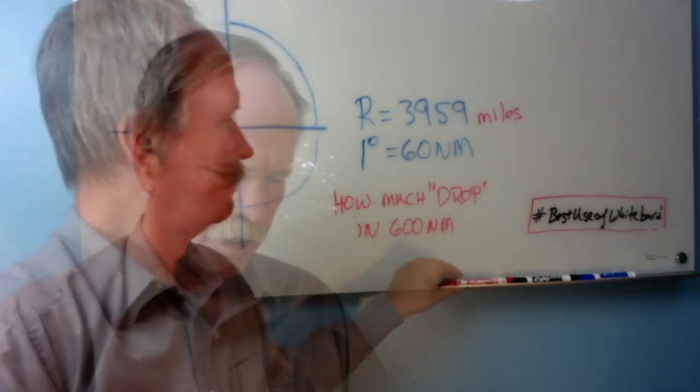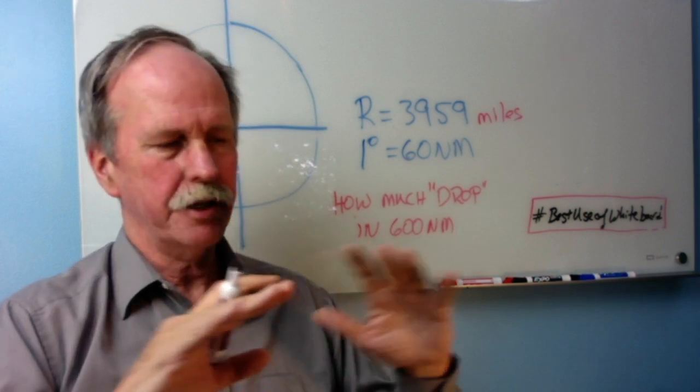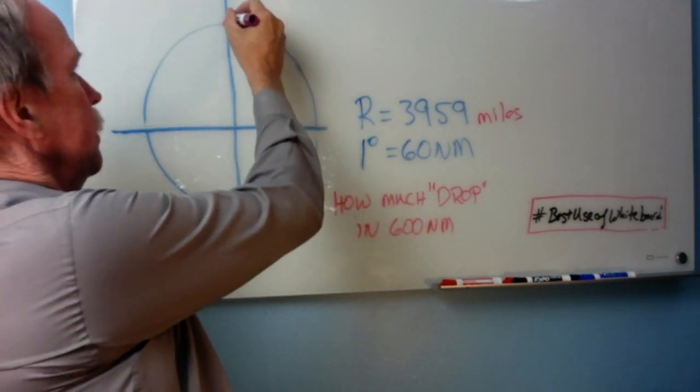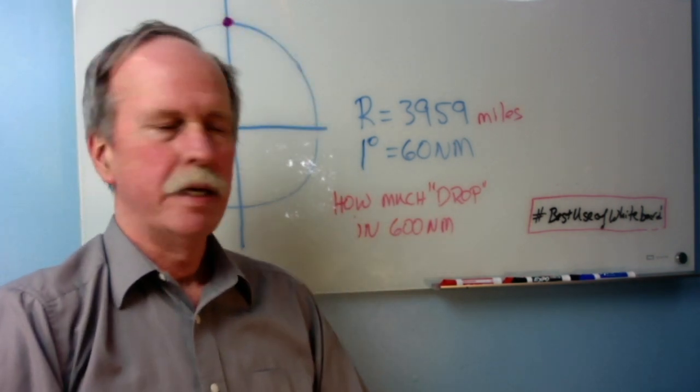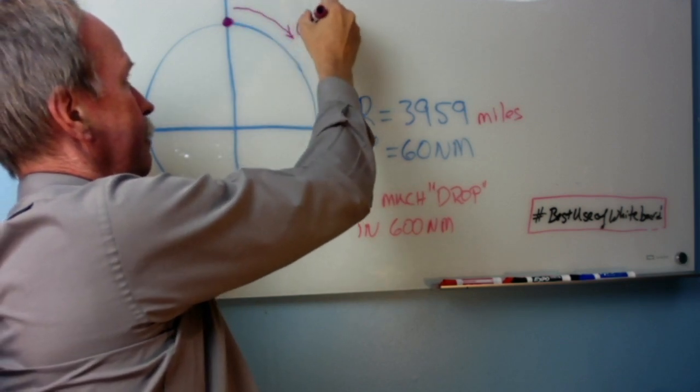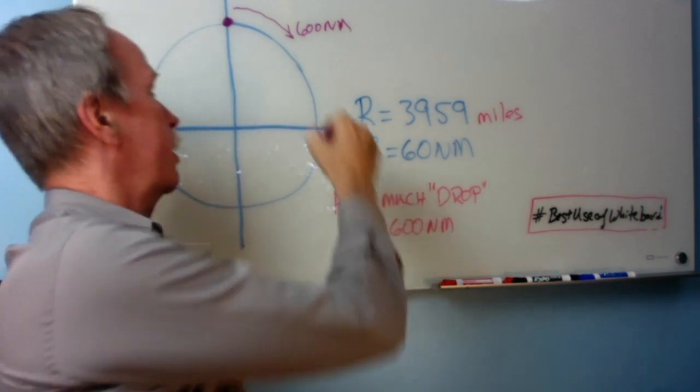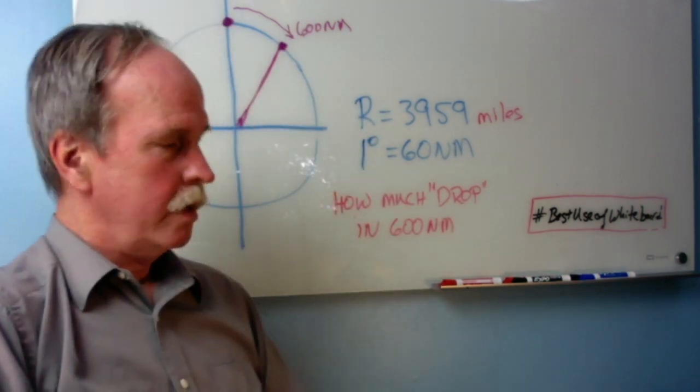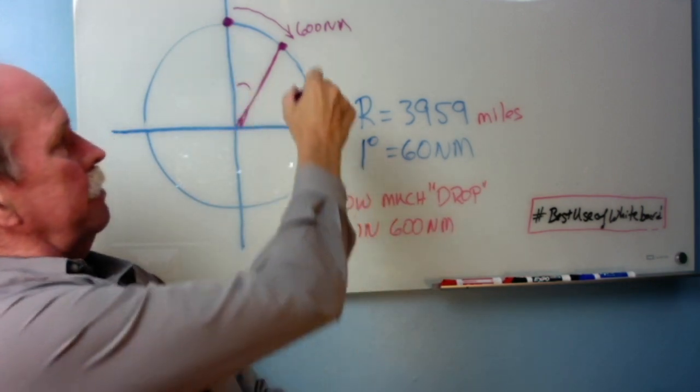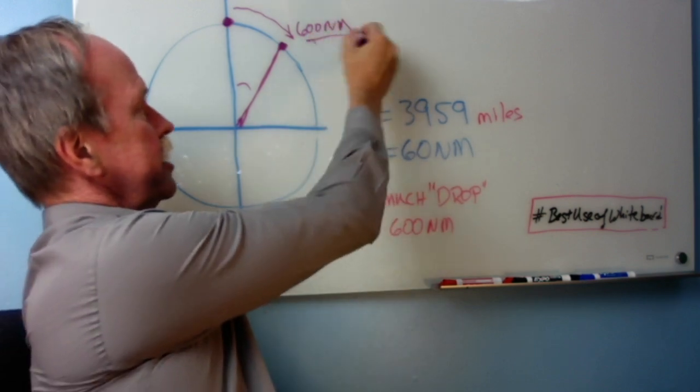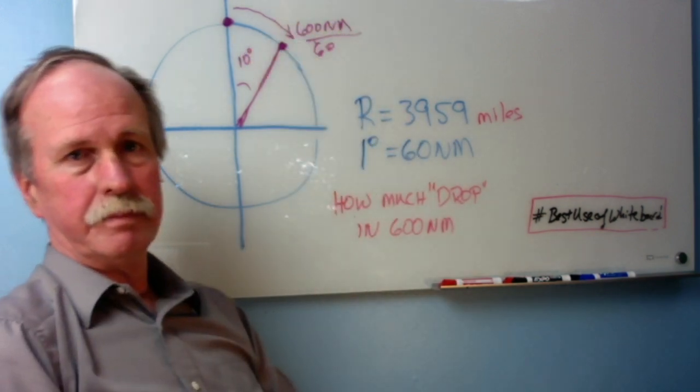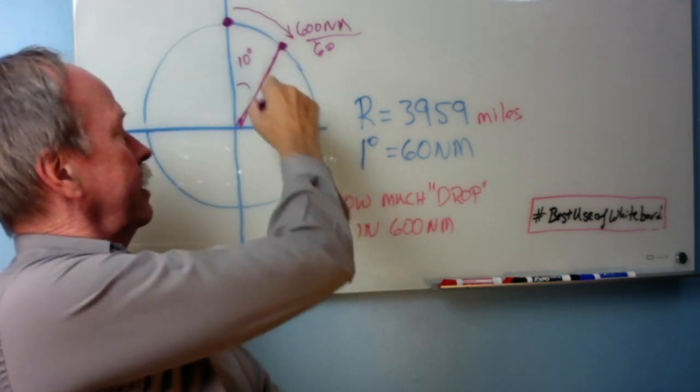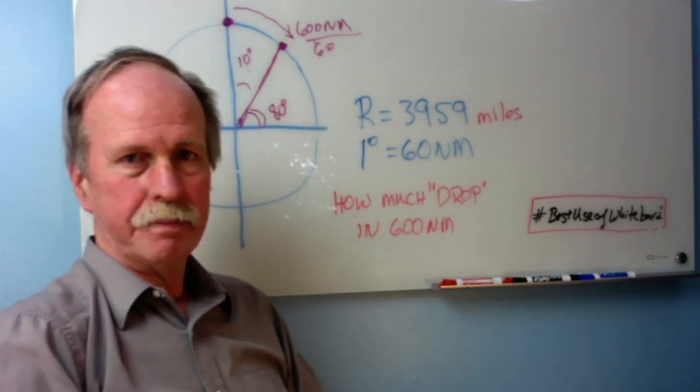One of the tenets of living on a sphere is the ground goes down in every direction away from you. You're on the top of a sphere. Let's have this be our starting point right at the very top, and then we're going to go down 600 nautical miles to this point right here. There's an angle formed there. How much is this part of the angle? It's 600 divided by 60, which is 10 degrees. How much is this part of the angle right here? If this total is 90 and that's 10, that means that's 80 degrees. So far, so good.